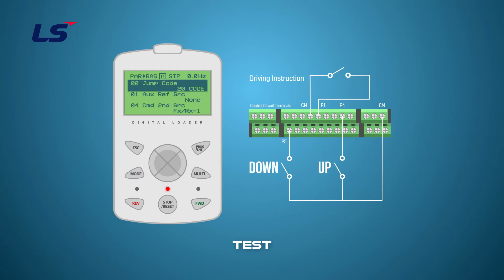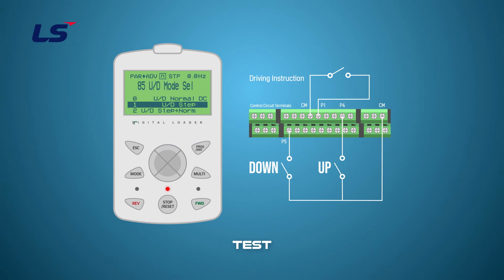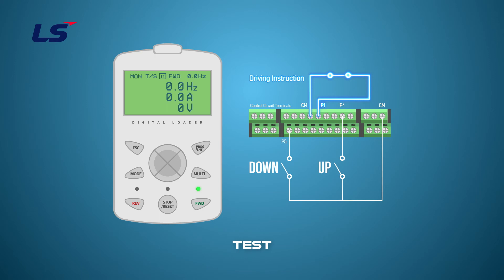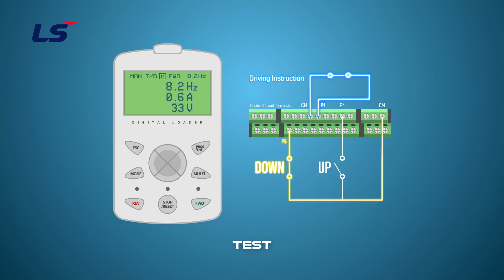Next, let's test the Up-Down step operation. Change the Up-Down mode of ADV 85 to 1 while maintaining the previous test settings. Then set the Up and Down step frequency of ADV 86 to 5 Hz. After setting this, initiate the FX digital input by turning it on, then turn on the digital input programmed as Up and wait. It can be seen that although the Up digital input is still on, it accelerates by 5 Hz set as the step frequency and then no longer increases. If you turn the digital input programmed as Up off and on, you can see that it rises 5 Hz again to reach 10 Hz. If the Down is turned on, it decelerates by the step frequency.